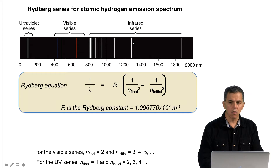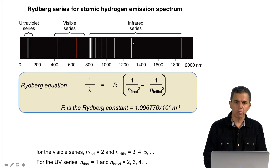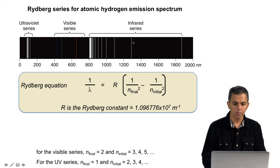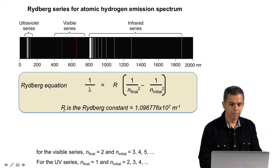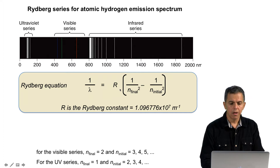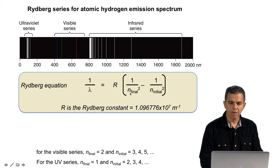This expression is called the Rydberg series, which is predicted by the Rydberg equation. It states that the reciprocal of the wavelength is going to be equal to a constant times one over the square of n final, referring to the Bohr model, minus one over n initial squared, referring to the Bohr model. This is the series for the emission spectrum.